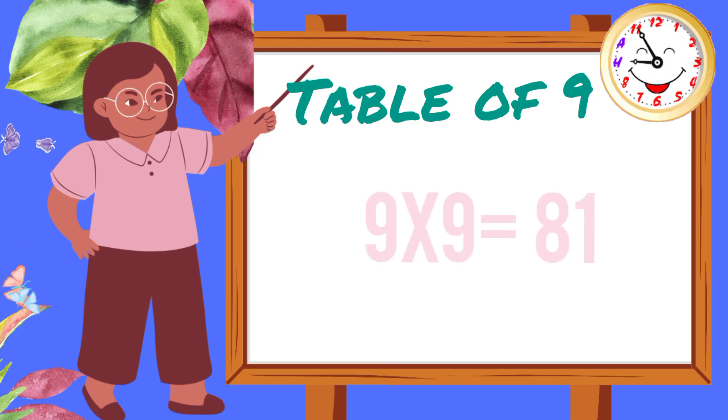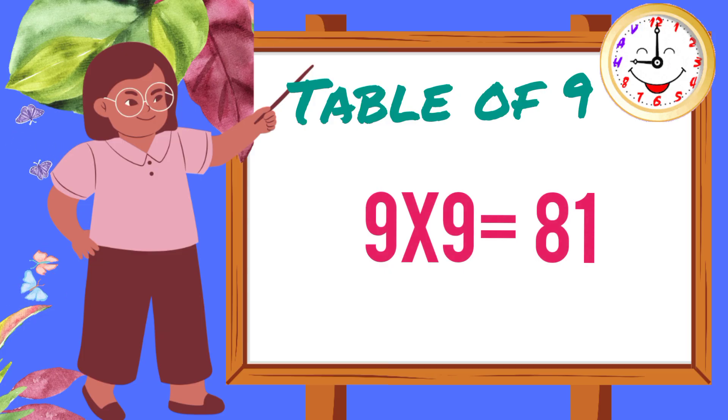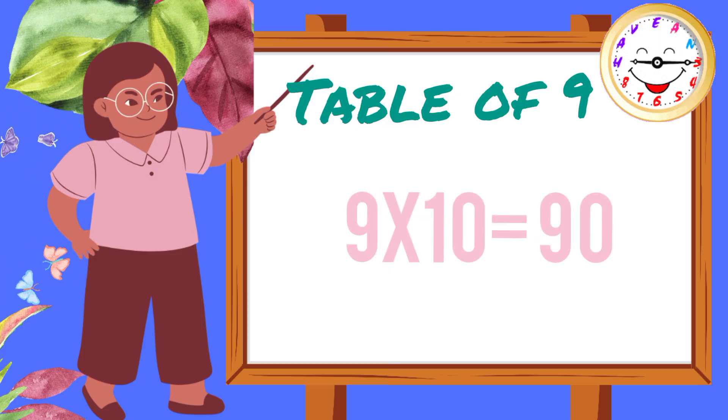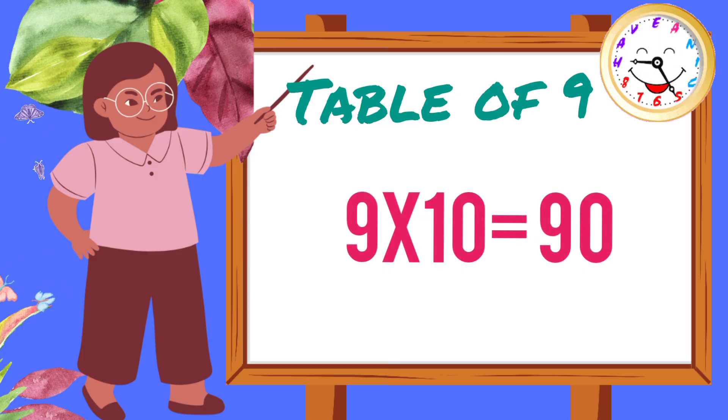Nine nines are eighty-one. Nine tens are ninety.